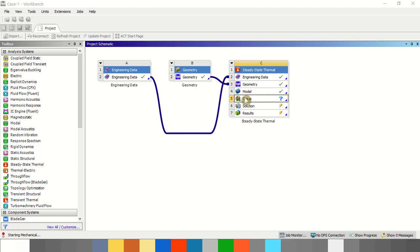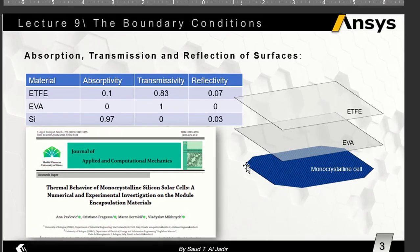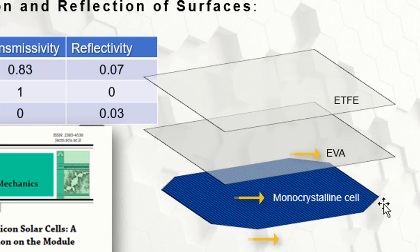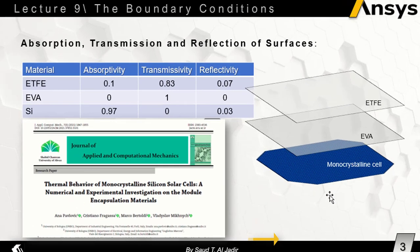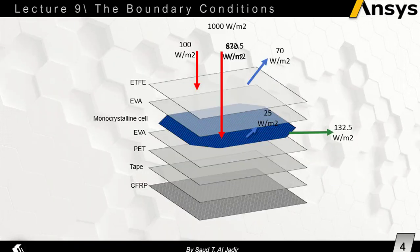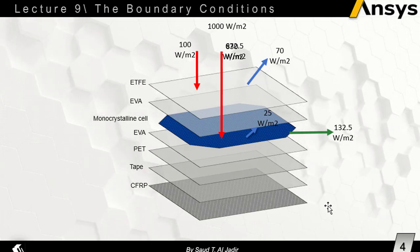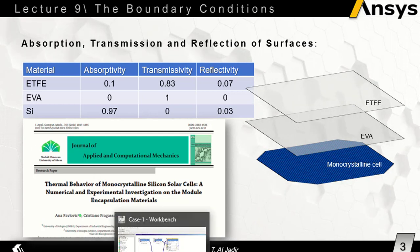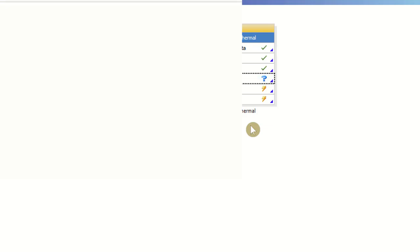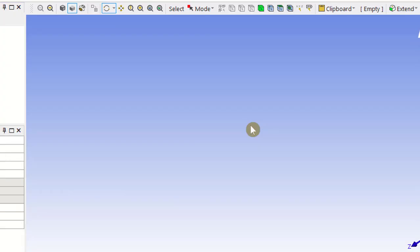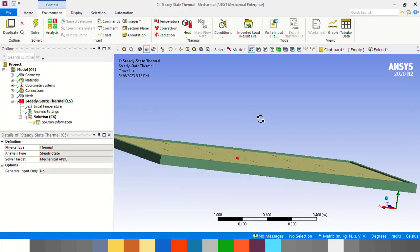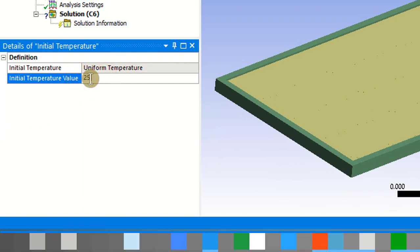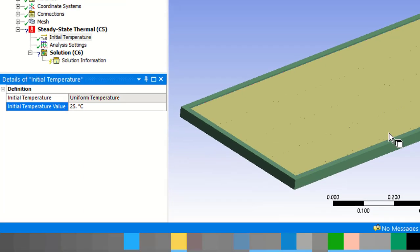The layer arrangement is: the ETFE layer, EVA layer, monocrystalline silicon cells, another EVA layer, a PET layer, and the CFRP layer. We will now start setting the boundary conditions for the steady state thermal analysis. The initial temperature is 25 degrees Celsius.